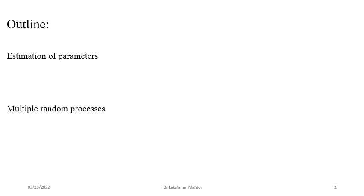Through that we will come up with an estimate of parameters. After that, if time permits, we will discuss multiple random processes. There is a requirement for multiple random processes because if you have a control system, your input might be one random process and the output would be another. You need to know the relation between input and output. If you input a random process the output is also a random process, and you will have complete information about the input and some idea of the system's impulse response to estimate your observation. In terms of random processes, to understand a simple LTI system you need to know multiple random processes.